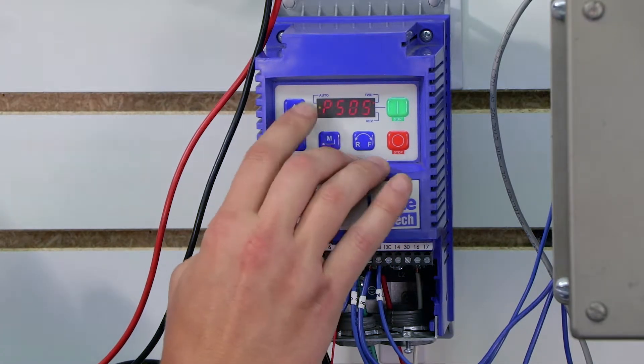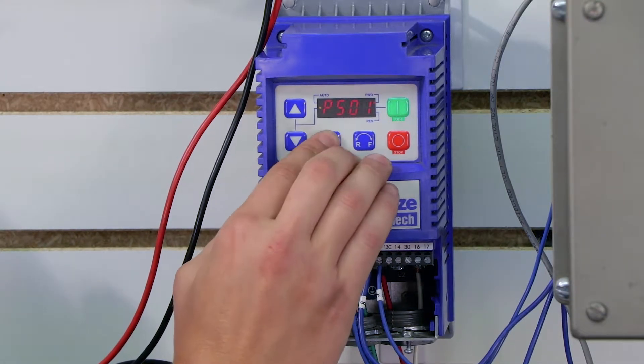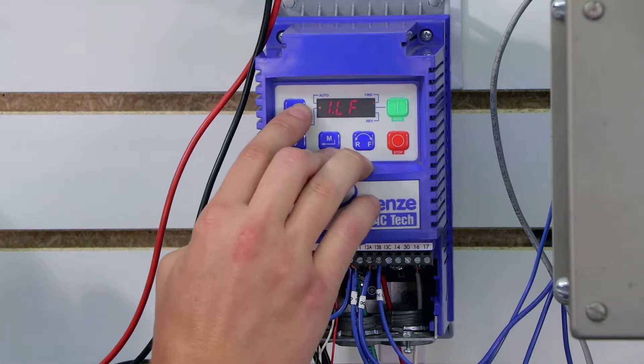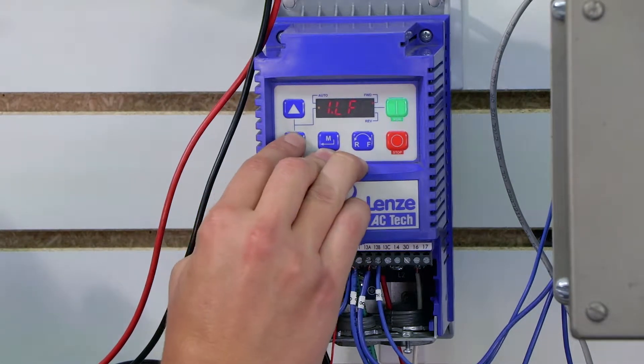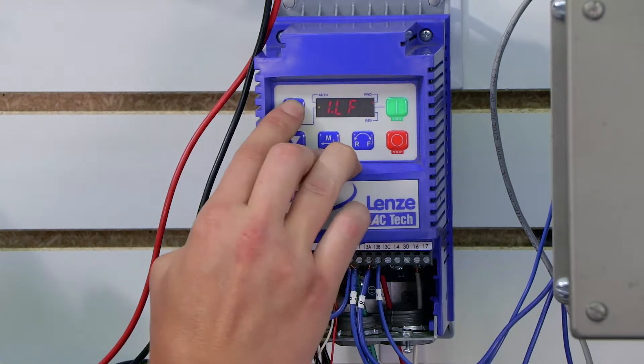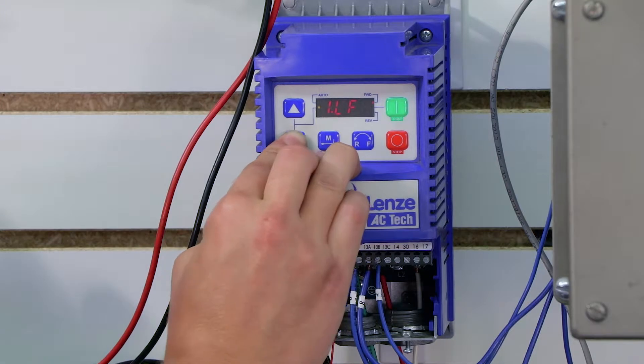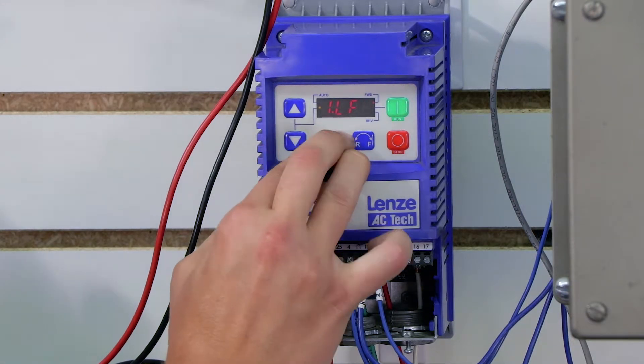Now if I pull up the menu I can go into parameter group 500, and 500 will actually give me my fault history. So if I want to look at all of my previous eight faults I can actually scroll down through them. In my case they're actually all the same, it's a low voltage fault because every time I cut power off to the drive technically it faults.